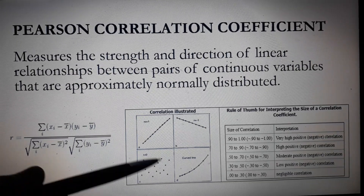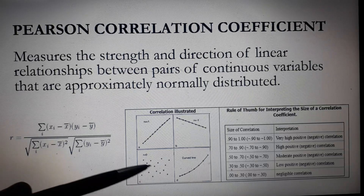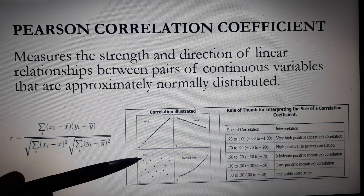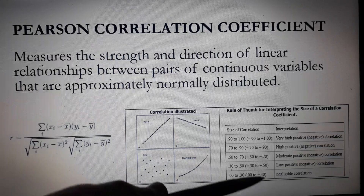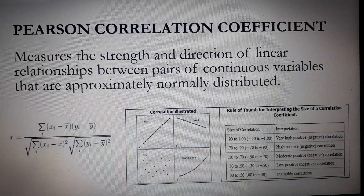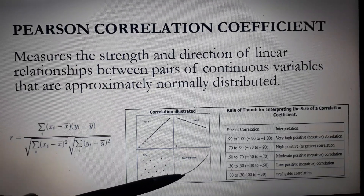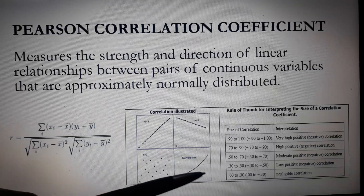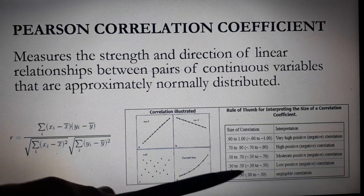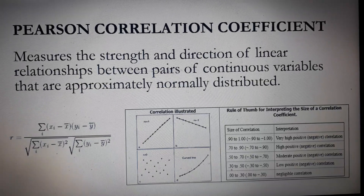On this scatterplot, the points did not form any line. Therefore, R is equal to 0, meaning we have negligible correlation. And in the last scatterplot, we have a curve — it's not a straight line. Therefore, the values could be found anywhere in the range of interpretations.